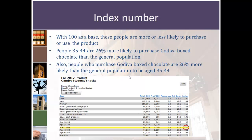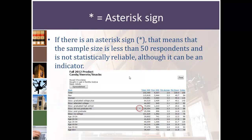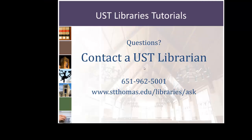If you see a line with an asterisk, that means that the sample size for this variable is less than 50 respondents — not statistically reliable, although it can be an indicator. We hope this helps you understand how to interpret the MRIplus MediaMark data. Let us know if you have any questions.